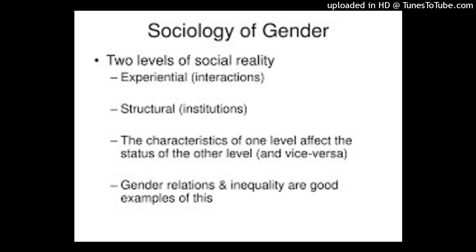Discussing the consequences created by gender as process, stratification, and structure — Judith Lorber, 1994. American sociologist Judith Lorber analyzes essential consequences created by gender in terms of process, stratification, and structure. Her book, Paradox of Gender (1994), includes these analyses on the above themes.